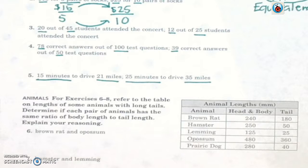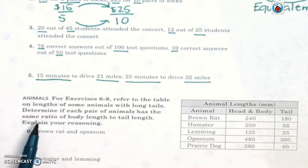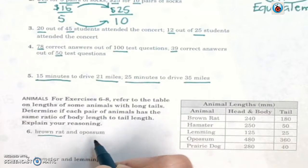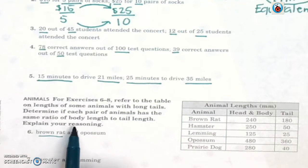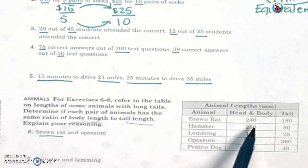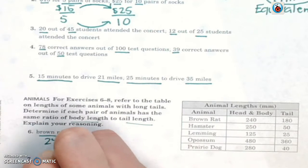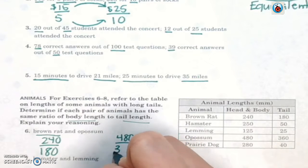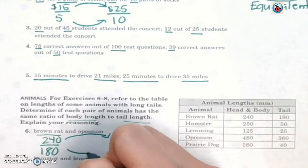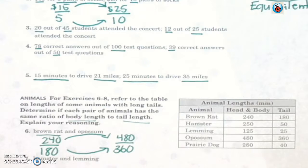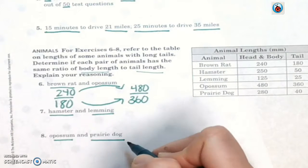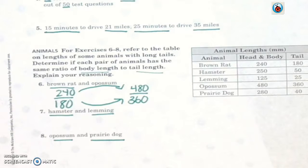For exercises 6 through 8, refer to the table on lengths of some animals with long tails. We're going to determine if each pair of animals has the same ratio of body length to tail length. So you're going to find the brown rat. Body length for the brown rat is 240, the tail length is 180. For the possum, we have 480 to 360. How do you get from here to here? If it's the same number, then your answer is equivalent. Make sure for these ones, you do hamster to lemming, and then possum to prairie dog. When you are done, please turn it into your designated tray. And we will be going over this when I get back.